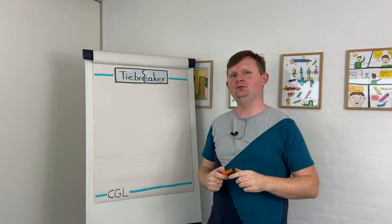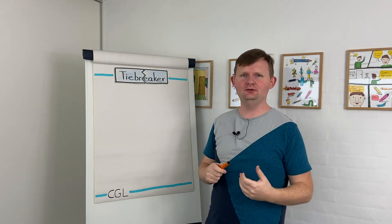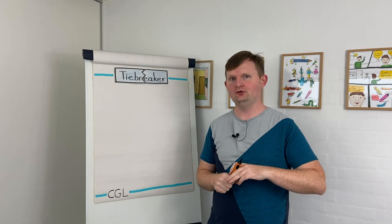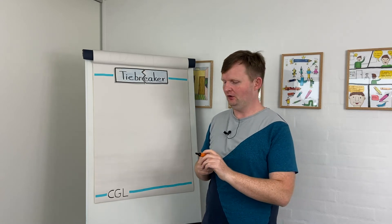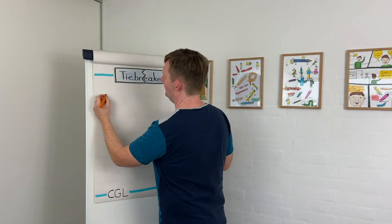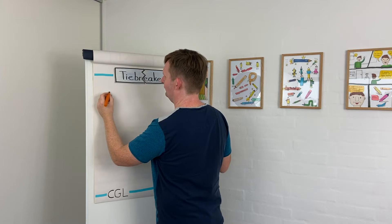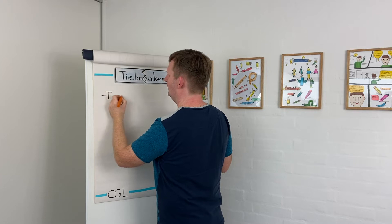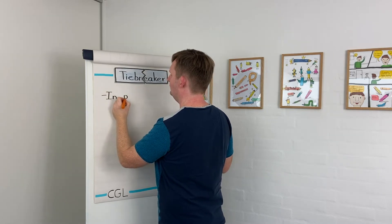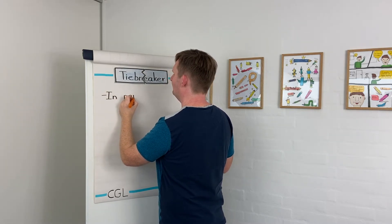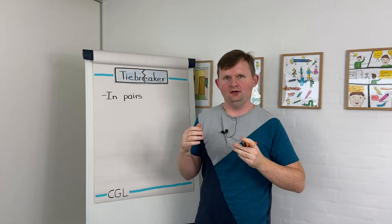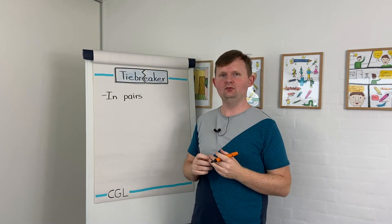A tiebreaker is something I use if I'm doing a liberating structure like '1-2-4-All' or something where I need to pick somebody to talk first. Often, if we do impromptu networking, these tiebreakers work really great when people are in pairs.